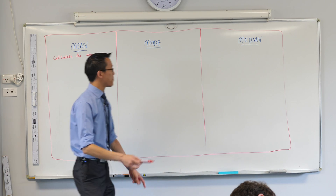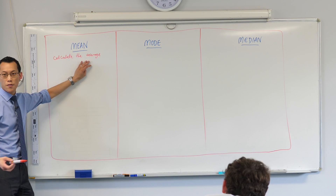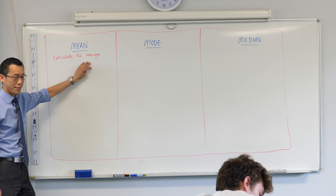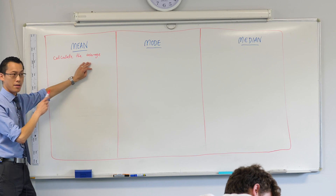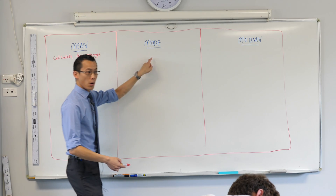Add them all up, divide by however many that you have. This is what we mean by the mean. Okay, mode.